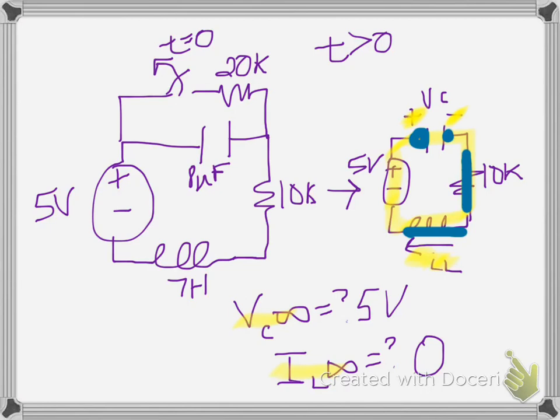That completes solving our initial conditions that we need in RLC circuits. Remember, it's a lot more initial conditions than we needed in just the RC or RL circuits, but solving for V_C infinity and I_L infinity would be the same as we did for those circuits — it's just looking at what it would be at DC well after time zero.